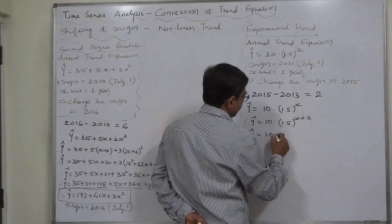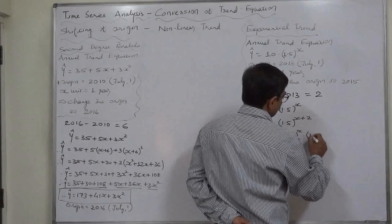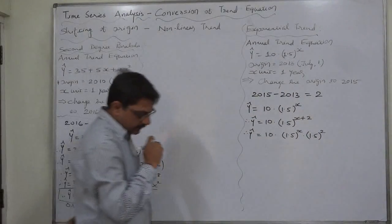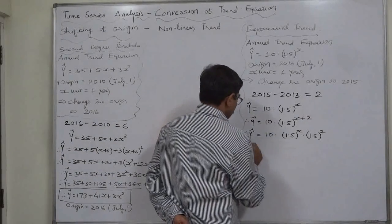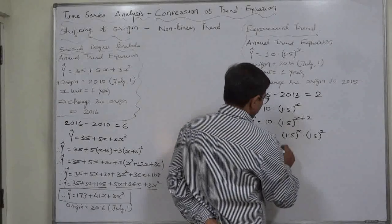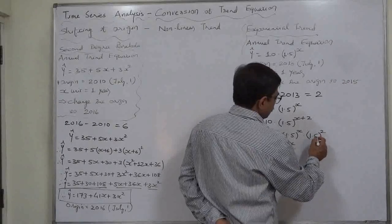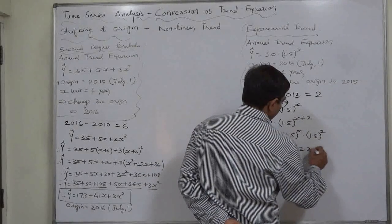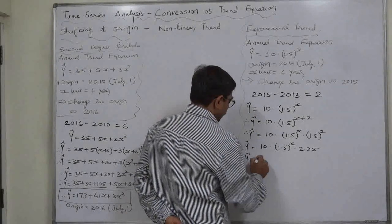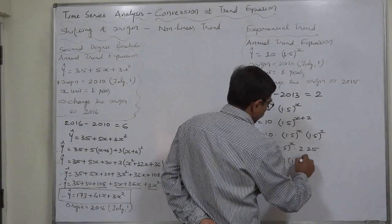That means it is 10 into 1.5 raise to x into 1.5 raise to 2. So 10 into 1.5 raise to x into square of 1.5 is 2.25.